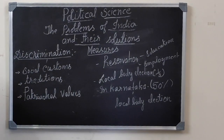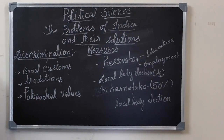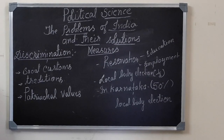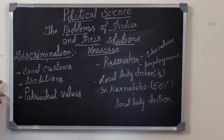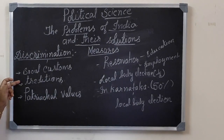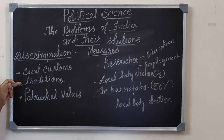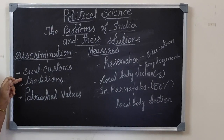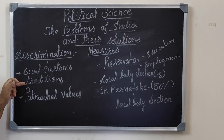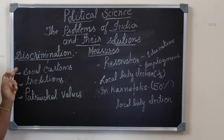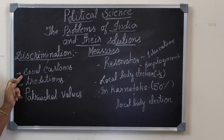First, try to understand discrimination on gender. There is no equality between men and women in our society. Why is there inequality in the society? Because of social customs and traditions. This inequality was practiced in the past, where men should be respected by women, and men were considered superior while women were considered inferior.